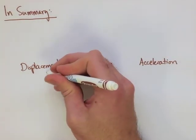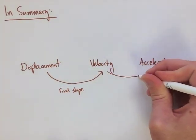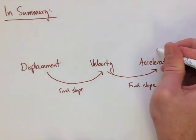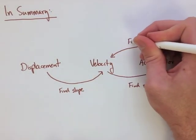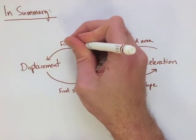If we're going from displacement to velocity, we need to find the slope of the curve on that graph, and then from velocity to acceleration, we need to find the slope as well. Going back the other way, we need to find the area under the graph for each case.